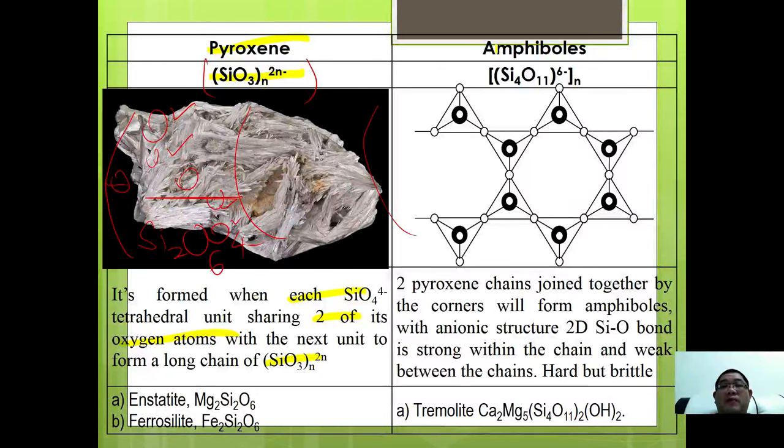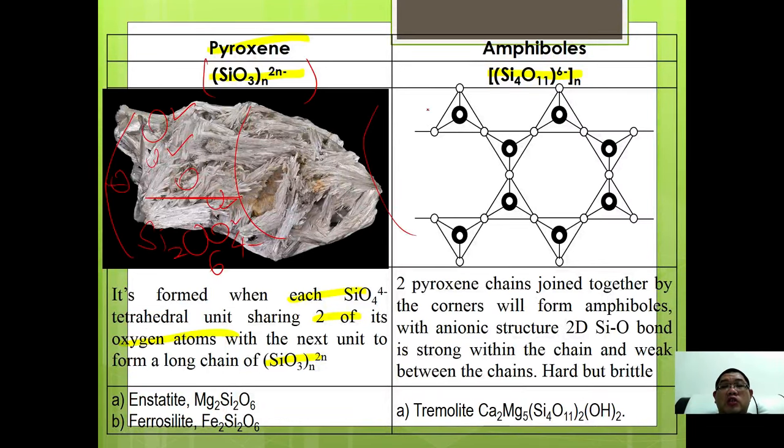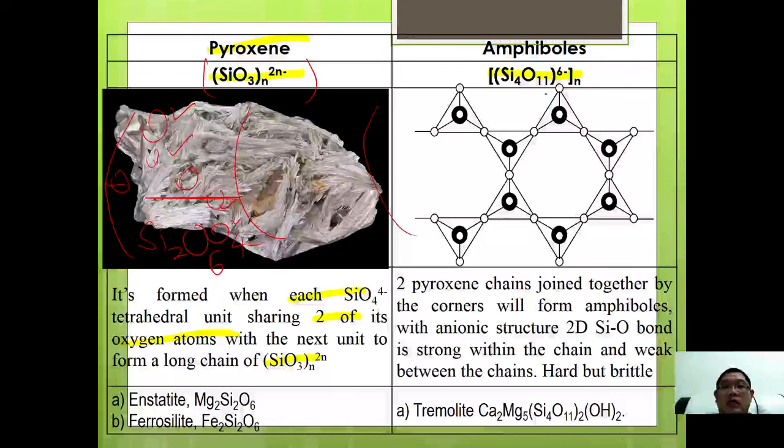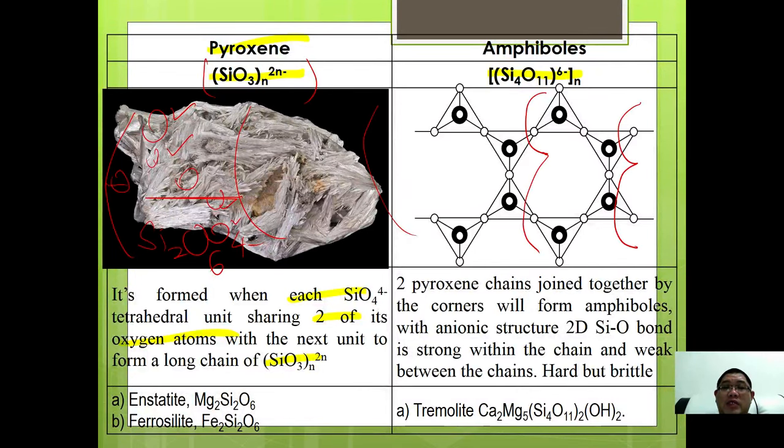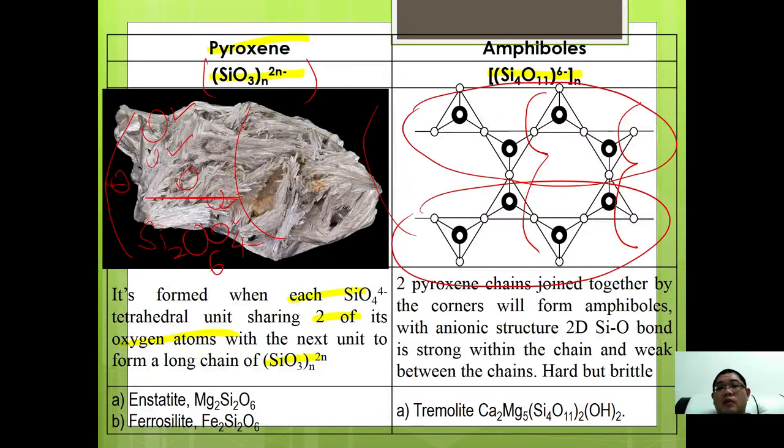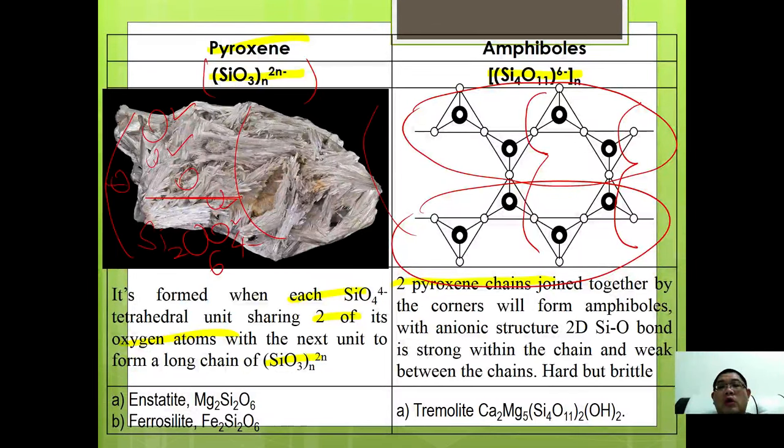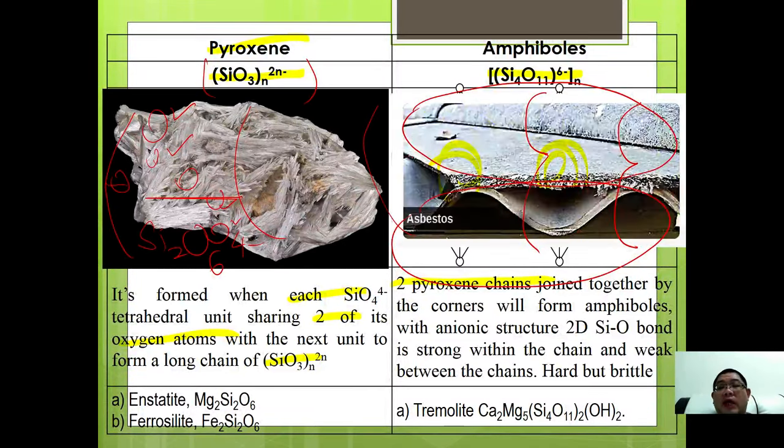Amphibole has the general formula Si4O11^6-. It is a derivative from pyroxene, made of two chain silicates. This is formed when two pyroxene chains are joined together by the corners, where each silicon is shared by two or three oxygens. The structure is very hard yet brittle due to the space available within the chains. Examples are tremolite, which we commercially use as asbestos.